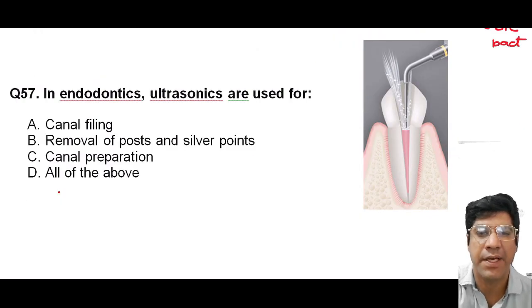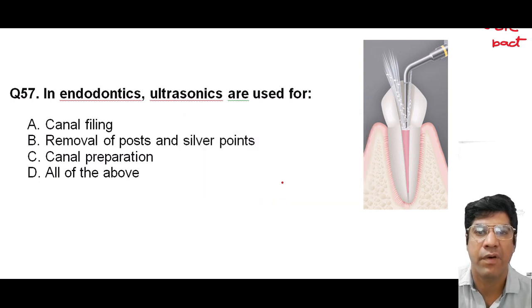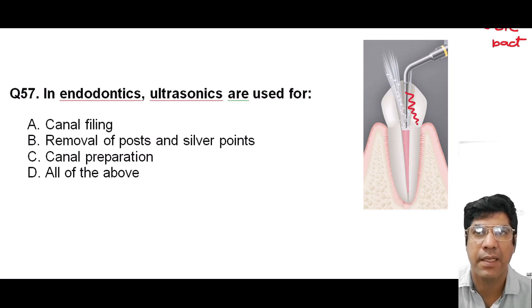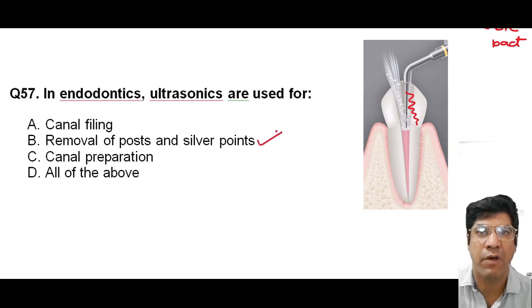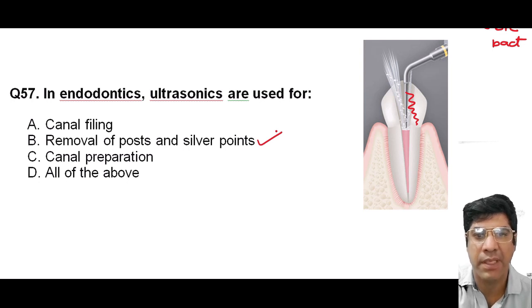In endodontics, ultrasonics are used for all of the listed purposes — answer is D. Ultrasonics are versatile tools in endodontics. The vibrating tips can be used for effective and efficient canal filing during root canal, vibrating at high frequency to precisely shape and clean narrow root canals. They can also be used for removal of posts and silver points by gently vibrating and dislodging them from the root canal, and for canal preparation — removing debris, smear layer, and tissue remnants from the canal walls.